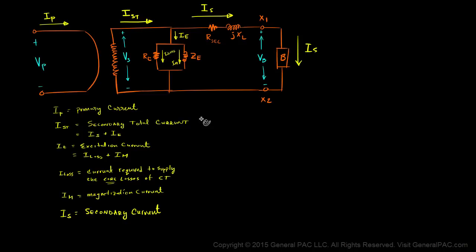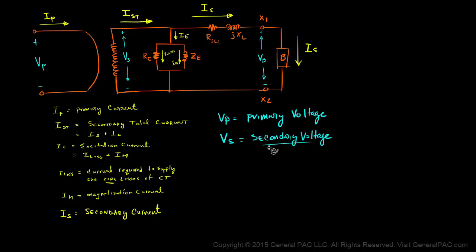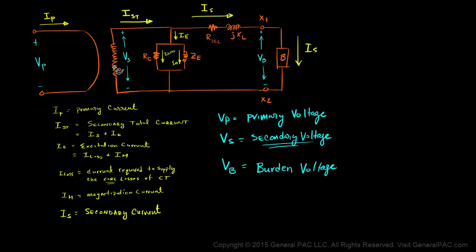Now let's move on to our voltages. VP is our primary voltage. VS is our secondary voltage — the secondary voltage is described as the voltage across the magnetization branch, which is a very important voltage. VB is our voltage across the burden, which is also very important. Often times VS and VB are used interchangeably, but they should not be — they are two different voltages.